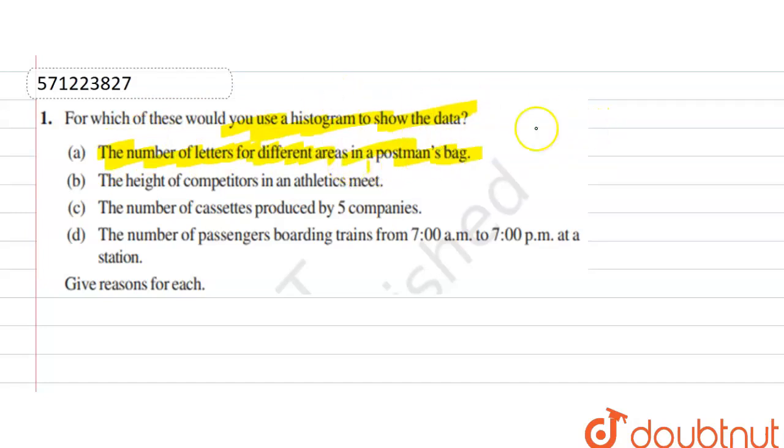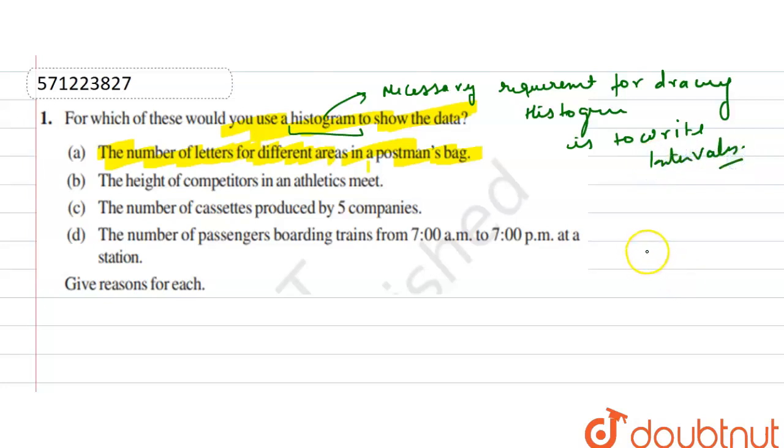So first of all, we define how to draw a histogram. The necessary requirement for drawing a histogram is to write in intervals. So we have to write in intervals like 6 to 8, 8 to 10, 10 to 12 like this.